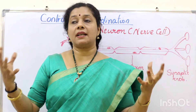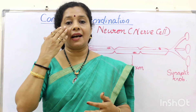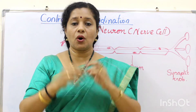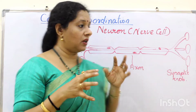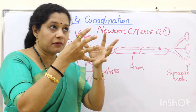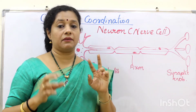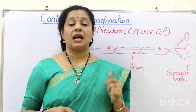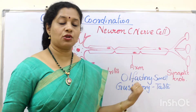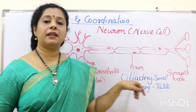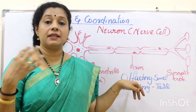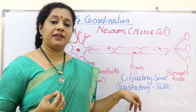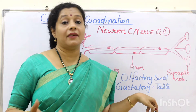Dendrites are present in large numbers in our sense organs, because sense organs receive impulses or stimuli from the environment. Our eyes receive signals of sight, ears receive sound, and skin receives touch. These sense organs have nerve endings called dendrites. There are two receptors to study: the olfactory receptor — related to smell, located inside the nostrils — and the gustatory receptor — receiving the sense of taste, located on the tongue.